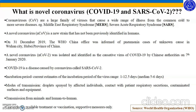Coronaviruses are a large family of viruses that cause a wide range of illness, from common cold to severe diseases. A novel coronavirus, NCOV-19, is a new strain that has not been previously identified in humans. On December 31, 2019, the WHO China office was informed of pneumonia cases of unknown cause in Wuhan city of Hubei province, China. A novel coronavirus, NCOV-2, was isolated and identified as the causative virus of COVID-19 by Chinese authorities on 7 January 2020. COVID-19 is a disease caused by the coronavirus called SARS-CoV-2. The incubation period is currently estimated to range from 1 to 12.5 days with a median of 5 to 6 days.